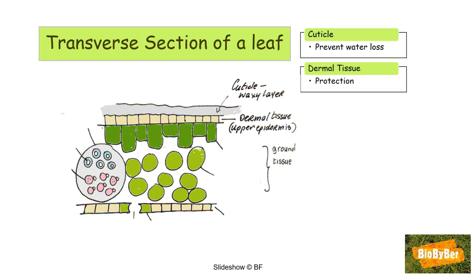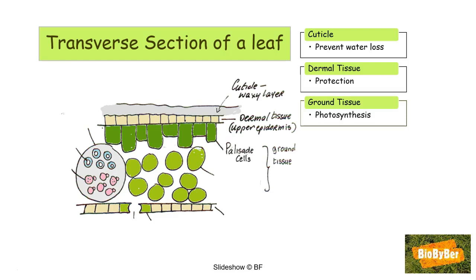The next type of tissue is ground tissue. Here it contains many chloroplasts, which contain chlorophyll, so the ground tissue carries out photosynthesis. The first type of ground tissue is the palisade cells, which form the upper layer nearest the sun. The palisade cells are tightly packed — P for packing, P for palisade, P for photosynthesis. They are also full of chloroplasts to maximize the chances of capturing sunlight for photosynthesis.